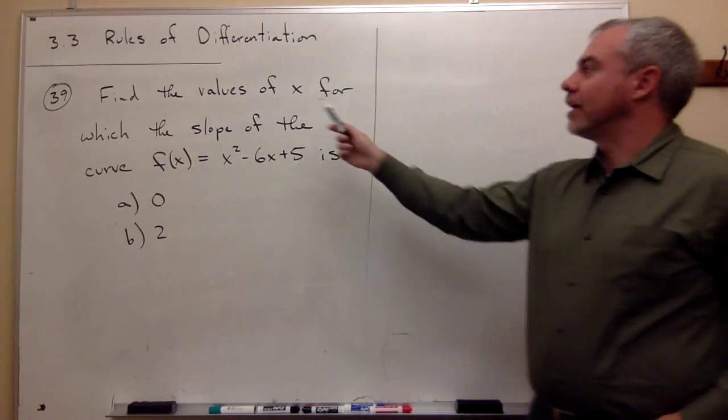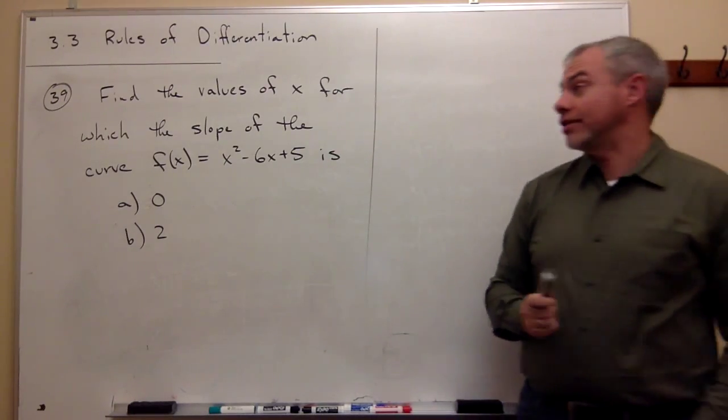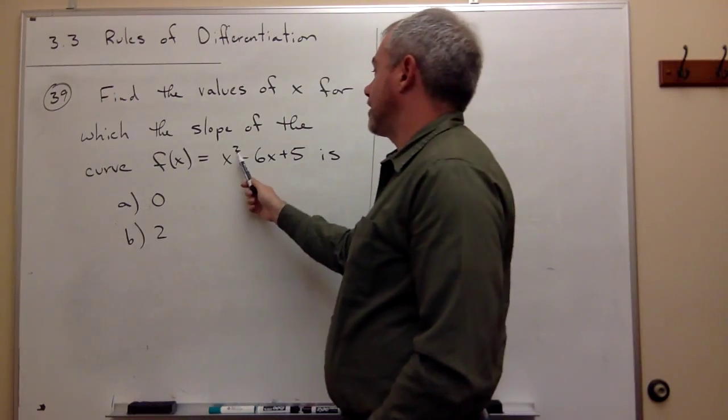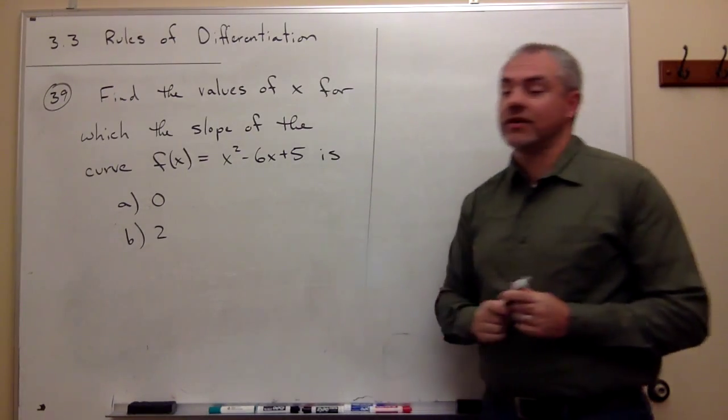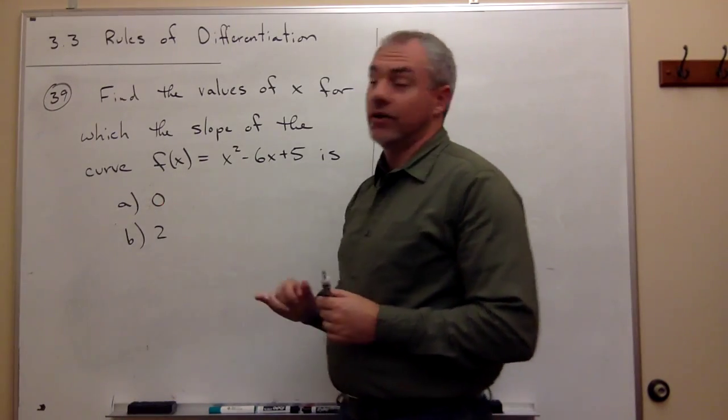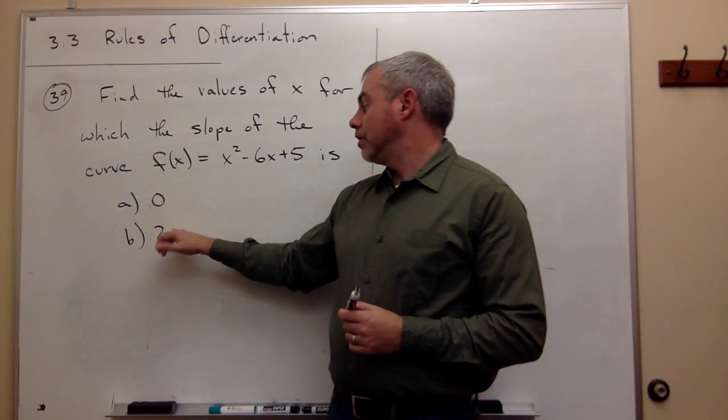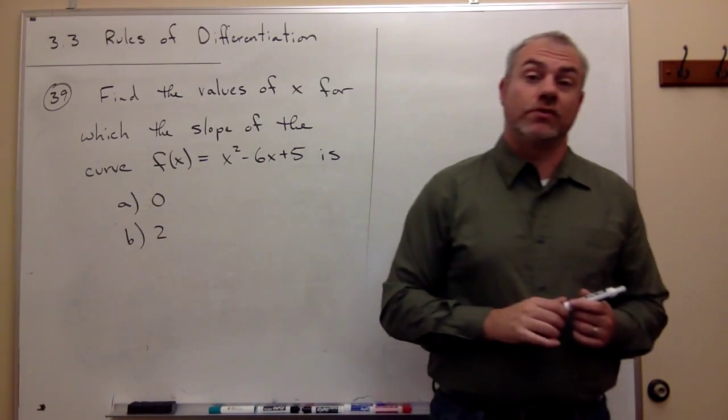In number 39, we'd like to find the values of x for which the slope of the curve f(x) = x² - 6x + 5 is two different values. We'd like to find values of x for which the slope is 0, and secondly, for which the slope is 2.